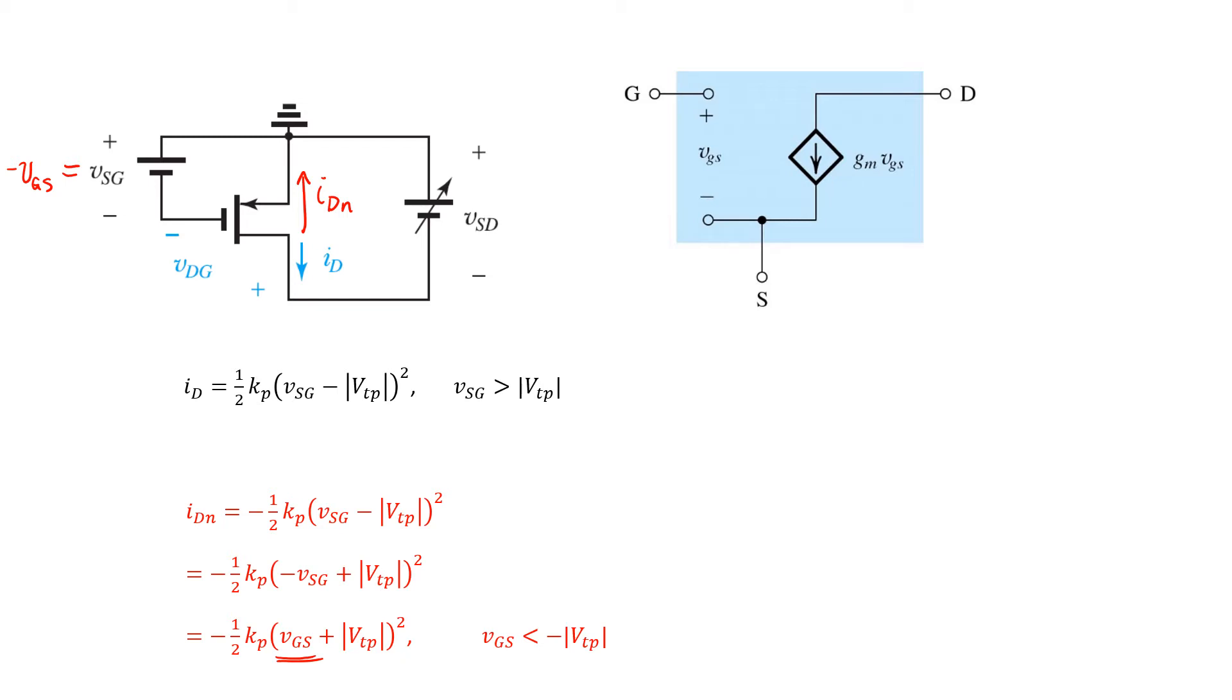If we sketch a plot of that bottom expression, then we end up with something like this. Now remember that you only enter square law in this case when VGS is less than negative VTP, and that beyond there you have this square law quadratic relationship here. So that's essentially a plot of this bottom expression here. And the idea is that the small signal model is valid when the transistor is operating in saturation, so some operating point over here. And the small signal parameter, gm, is nothing more than the slope of this curve evaluated at the operating point, Q.